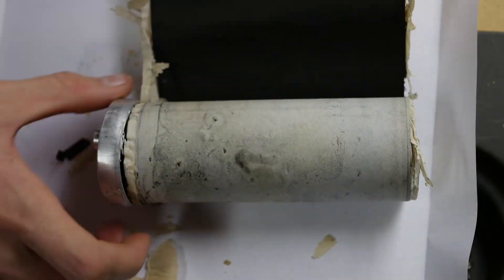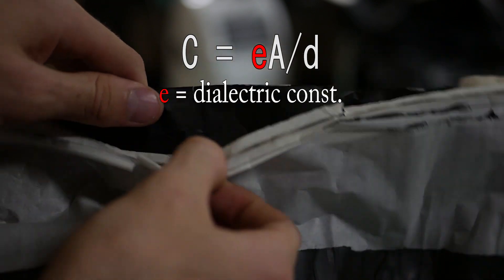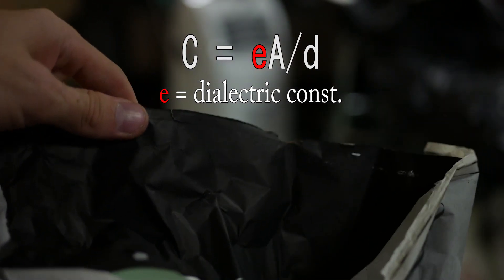Now this black material is known as the dielectric. What it does is increases the capacitance so you can basically fit more energy inside your capacitor.